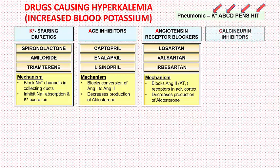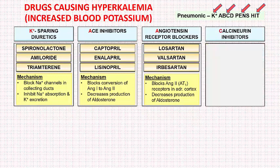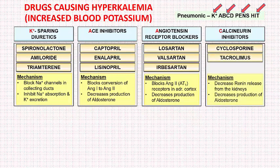The next class of drugs is calcineurin inhibitors, which includes cyclosporine and tacrolimus. These drugs inhibit renin release from the kidneys, thereby decreasing the production of angiotensin 2, which in turn causes a decrease in aldosterone production. This results in sodium excretion and potassium retention.